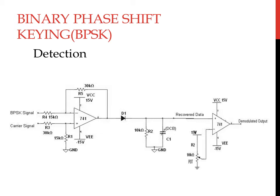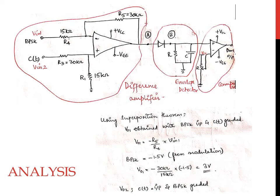Now, coming to the detection of BPSK. In the detection circuit, the first part is a difference amplifier, followed by an envelope detector and a comparator. The working of the comparator and the envelope detector has already been demonstrated in the ASK video tutorial, therefore it will not be repeated in this tutorial. Let us look into the circuit in detail.